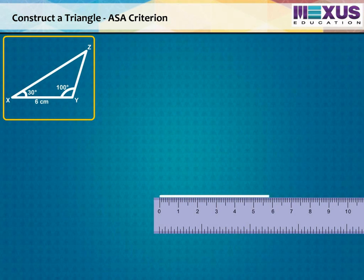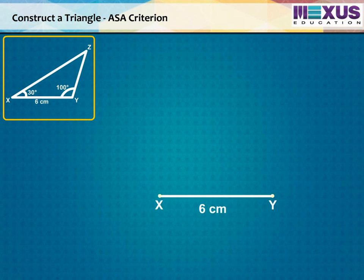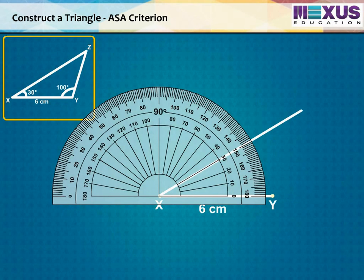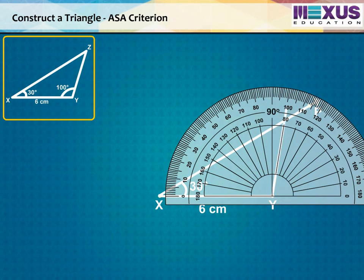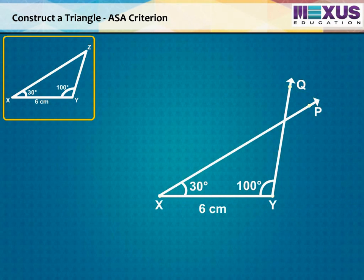Start with segment XY with length 6 cm. From point X, draw a ray XP making an angle of 30 degree with XY. Now, from point Y, draw a ray YQ making an angle of 100 degree with YX. Now, Z has to lie on both the rays XP and YQ. So, mark the point of intersection of the two rays as Z. Hence, we get our required triangle XYZ.